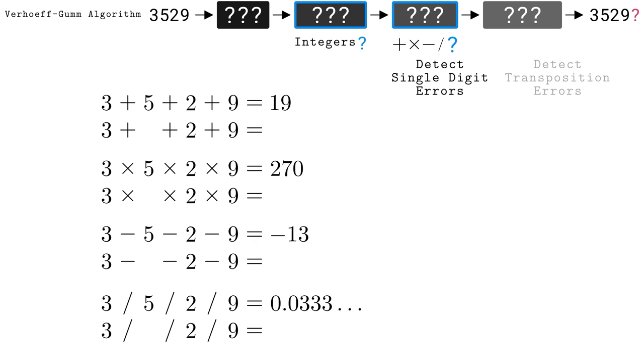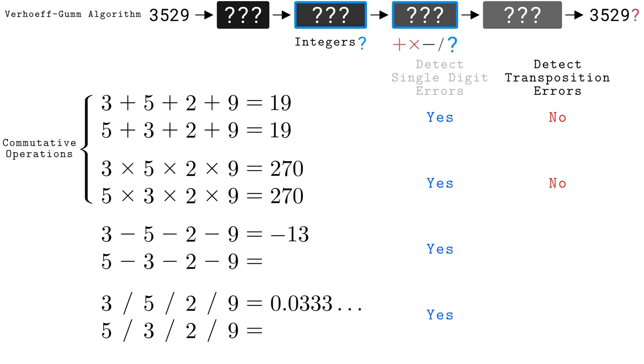If we change the 5 to a 7, adding, multiplying, subtracting, and dividing all the digits results in something different, which is a good start. However, if we transpose the 3 and 5, adding and multiplying gives the same result as before. Those operations alone would not detect the transposition. Mathematicians describe addition and multiplication as commutative operations because the order does not matter.